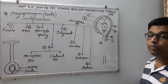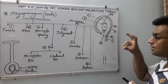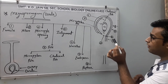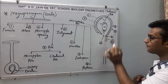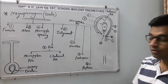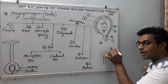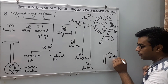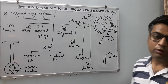The Embryo sac develops from the Nucellus, as shown in the diagram. The extended part of the Funicle is known as the Raphe, visible here in the diagram. This completes the structure of Megasporangium, also known as Ovule.